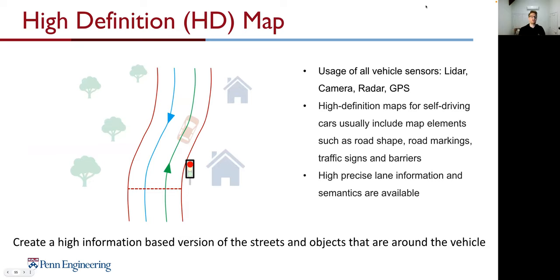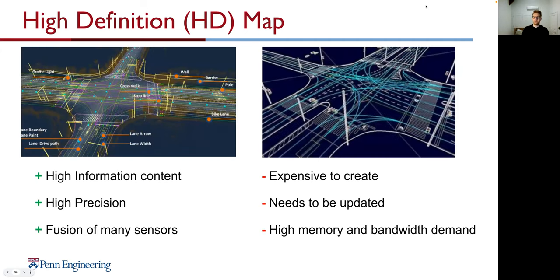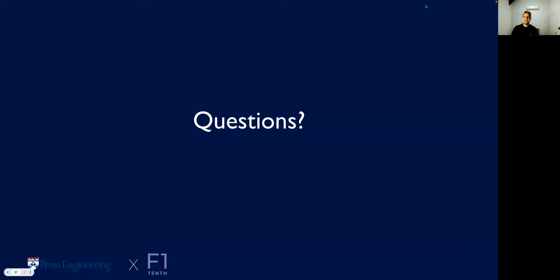Finally, High Definition (HD) Maps. We use all vehicle sensors — LiDAR, camera, radar, GPS — to create a very high-accuracy definition of road shapes, road markings, traffic signs, and barriers, providing precise lane information for path planning, localization, and decision making. HD maps have high information content with high precision, but they are expensive to create, need constant updates, and require high memory and bandwidth on the vehicle.